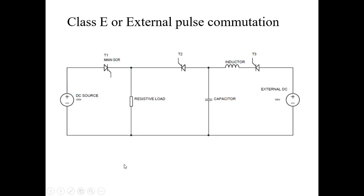In case of external pulse or Class E commutation circuit, we have a main SCR and two auxiliary SCRs. In normal operation, we fire the main SCR and current flows from DC source through T1 and through the resistive load.